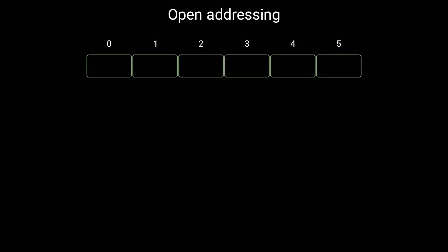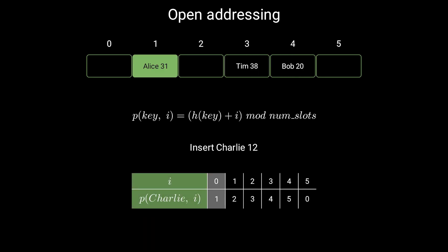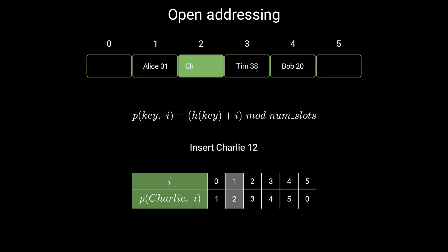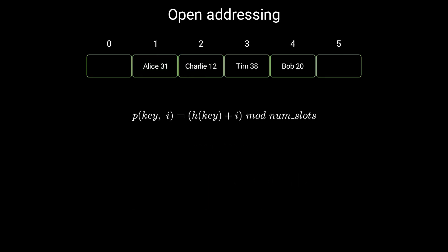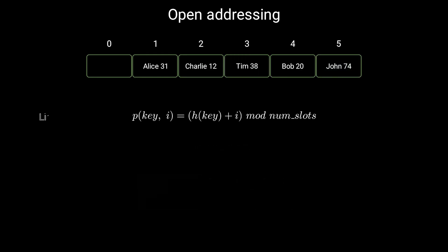Let's look at an example. Let's define the probing function which starts with the slot returned by the original hash function and adds one for each attempt. We will use the same hash function as before. So we can add Alice, Tim and Bob to their slots because they're already empty. Charlie should go to slot number 1, but it's already taken so we try the next slot. Same for John, but we keep trying until we find an empty slot. This probing function is called linear probing.